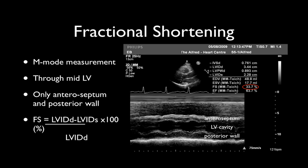Fractional shortening is commonly reported on echo reports. It is a measurement made using M-mode, derived from the parasternal long axis view. At right you can see a still image — an M-mode tracing from the parasternal long axis — with the dotted line perpendicular to the left ventricular anteroseptum and posterior wall. It is very important that this measurement be taken perpendicular to the walls.